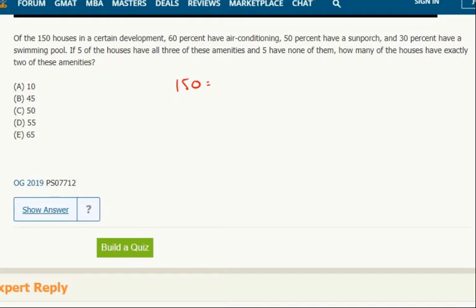I'll go ahead and convert. 60 percent is not bad, that's three-fifths. So 90 have air conditioning, 75 have a sunporch, and then three-tenths, that's 45 have a swimming pool.